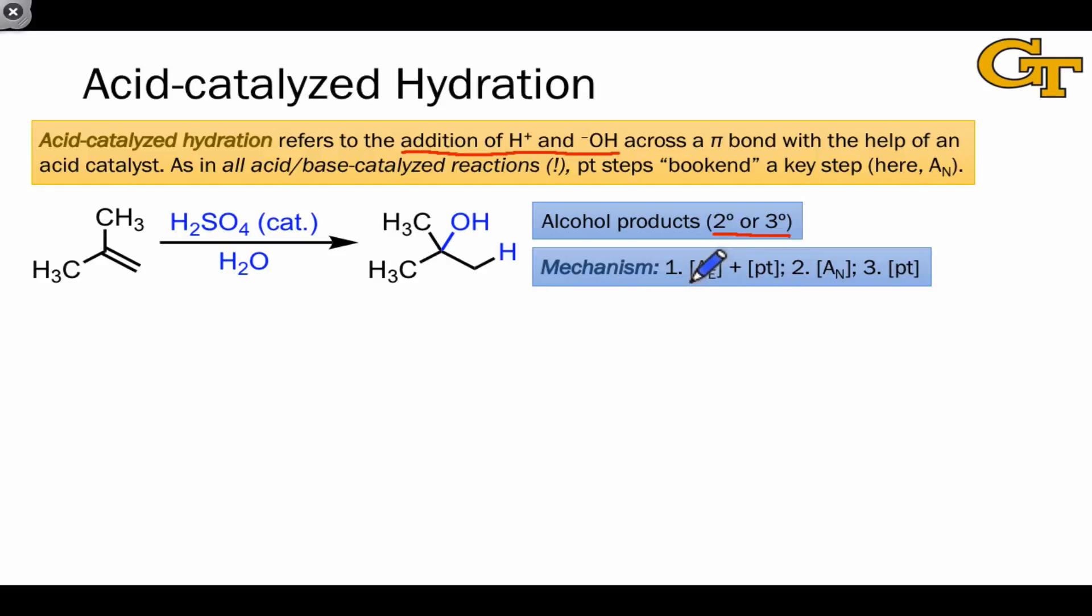The mechanism here involves a prototypical proton transfer with electrophile addition step. It's very similar to the first step of hydrohalogenation, followed by association of a nucleophile, which is again very similar to hydrohalogenation, followed by a final proton transfer step. The thing I want to draw your attention to about this mechanism, which is true of all acid-base catalyzed mechanisms, is that proton transfer events surround a key mechanistic step in the center of the mechanism, the A-sub-n. As I put it on the slide here, the proton transfer steps bookend the key A-sub-n step.